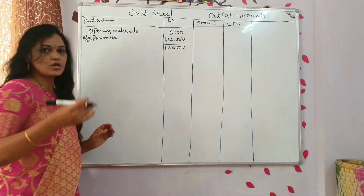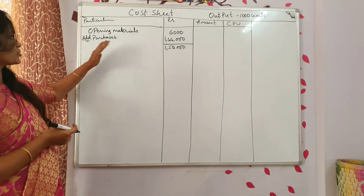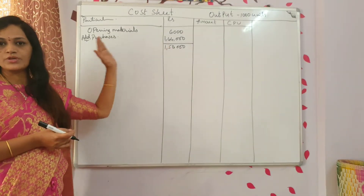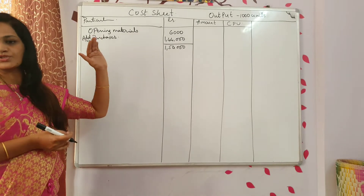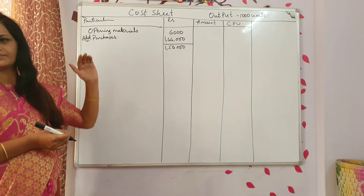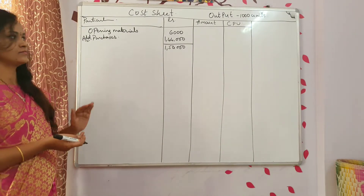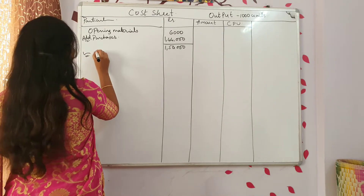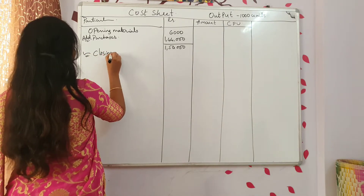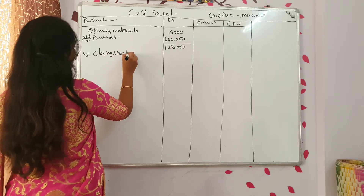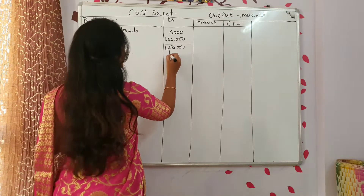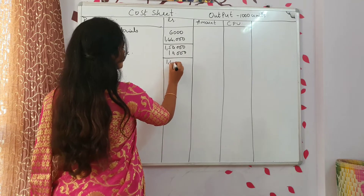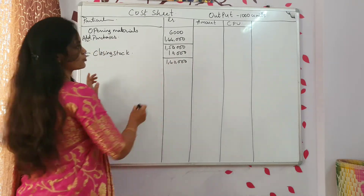Is there any closing stock? If you have closing stock, you have to subtract from this. If there is no closing stock, you leave it as is. Stock of materials on 31st January 2014: 10,000 — so closing stock is 10,000. Now total materials consumed is 1,40,000.